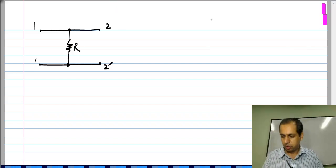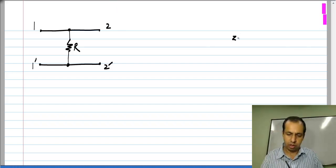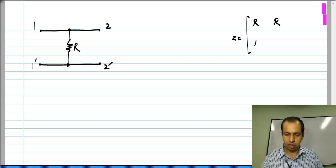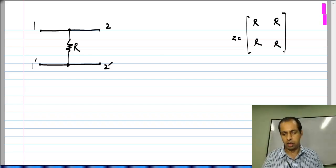In this case, you will find that the Z parameters will be R, R, R, and R.